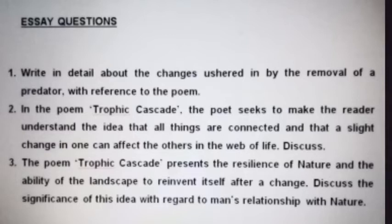The essay questions are: first, write in detail about the changes ushered in by the removal of a predator with reference to the poem. Second, in the poem Trophic Cascade, the poet seeks to make the reader understand the idea that all things are connected and that a slight change in one can affect the others in the web of life. Third, the poem presents the resilience of nature and the ability of the landscape to reinvent itself after a change — discuss the significance of this idea with regard to man's relationship with nature.